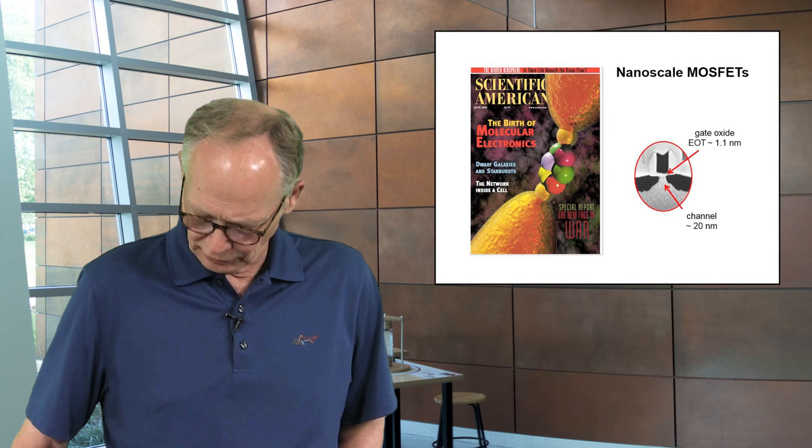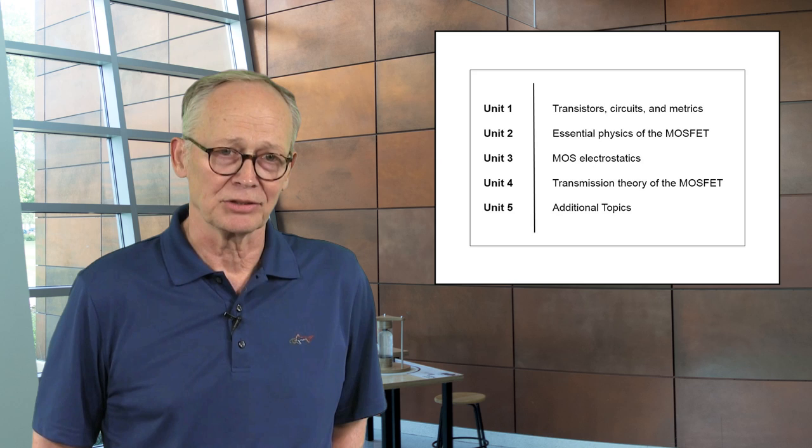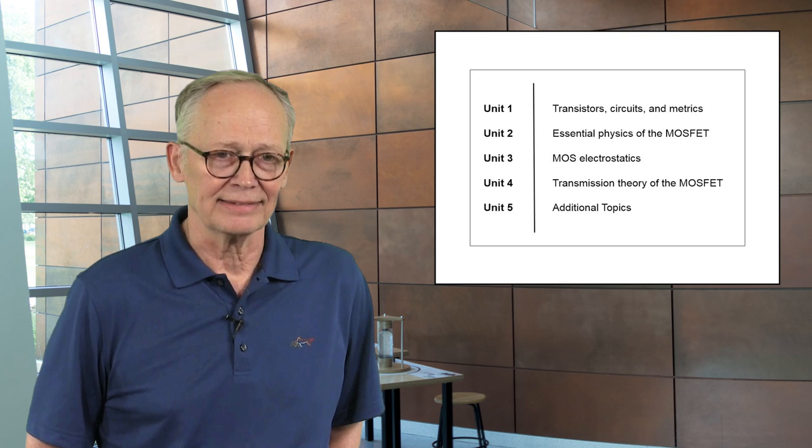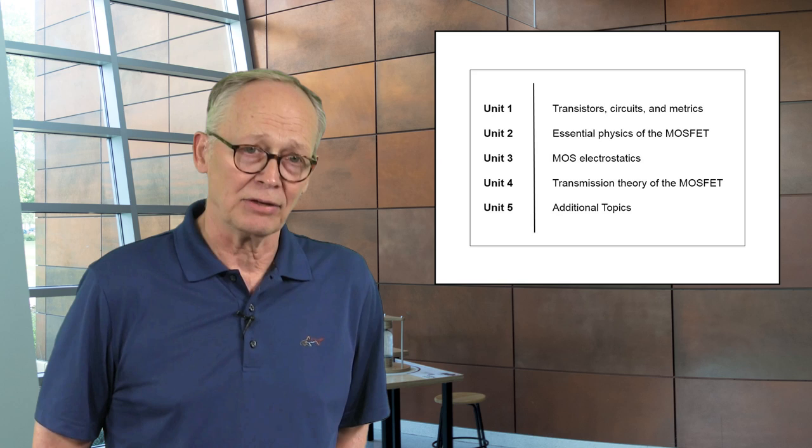The course has five units. The first is just a description of the transistor as a black box. If we apply voltages to the terminals, what currents flow, and then how those IV characteristics impact digital and analog circuits. The second part of the course is a completely non-mathematical description of the physics. So there's a very simple way that we can understand how these devices operate with little or no mathematics.